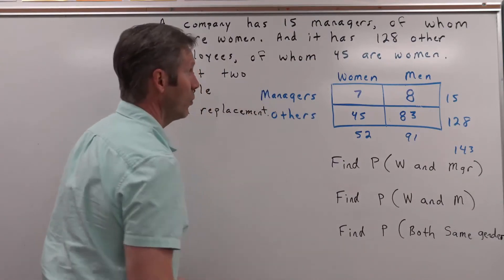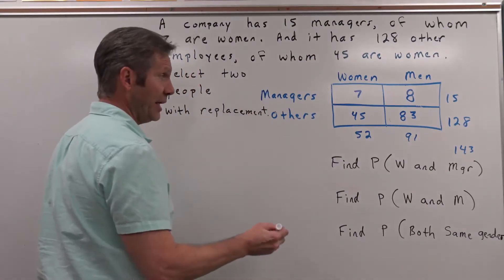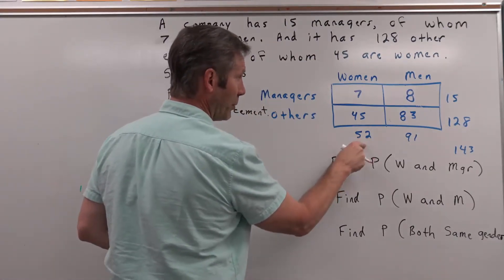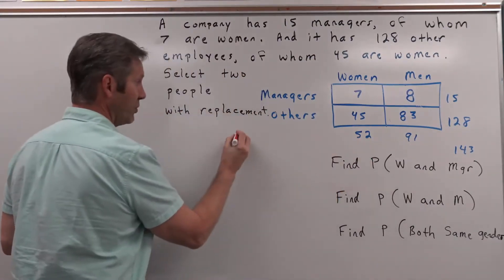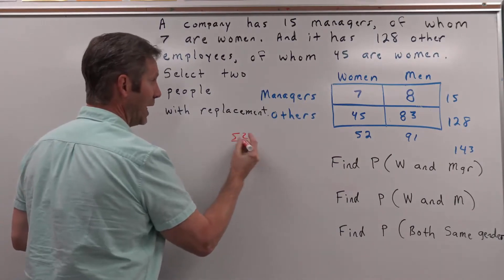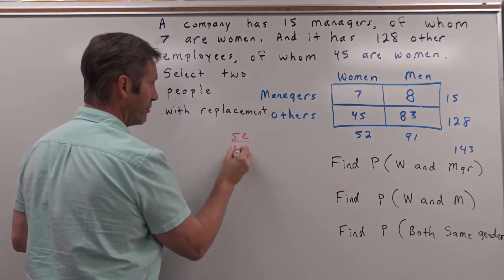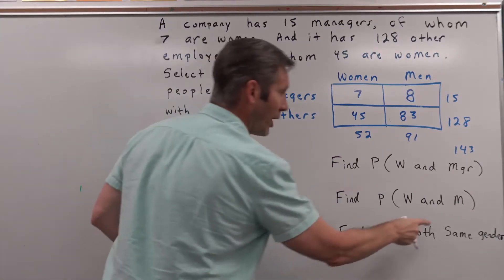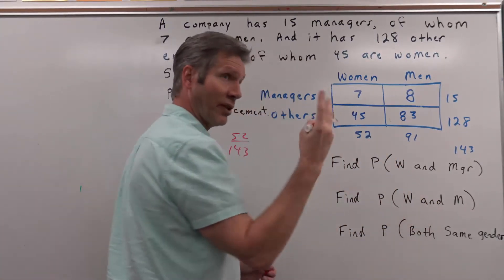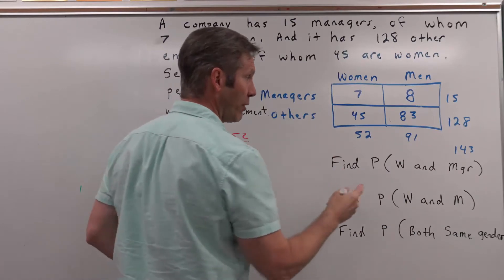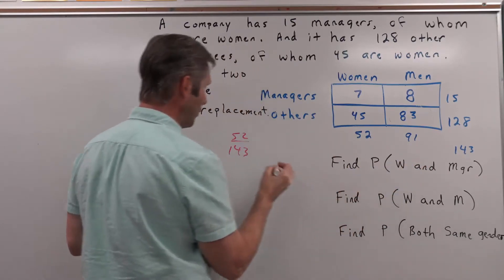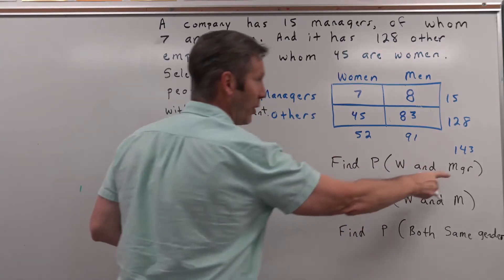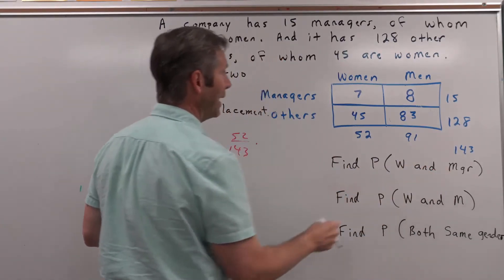The probability here is: first we get a woman. That probability is 52 out of 143. Remember, the word 'and' when we select more than one thing means multiply. So we're going to multiply that by the probability of getting a manager.